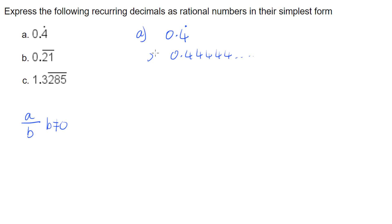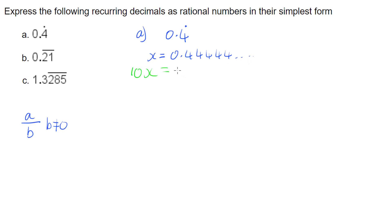We call our recurring number x. Then we get another number with exactly the same recurring pattern by multiplying x by some power of 10. Trying 10x: multiplying 0.4 recurring by 10 gives 4.4 recurring.